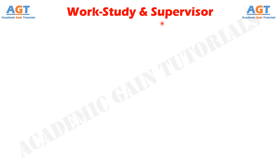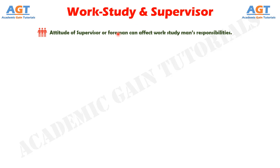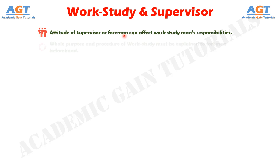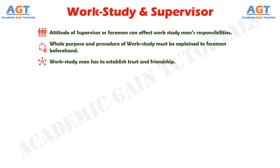The work study man is going to face difficult problems because of the supervisor or foreman's attitude. The foreman is a manager on the shop floor, and the success of work study in all its phases depends on him, as it is he who is going to cooperate with the work study man. Before work study begins, the whole purpose and procedures of work study must be carefully explained to the foreman so he understands exactly what is being done. The work study man must establish trust and friendship and sell his idea to gain the foreman's acceptability.